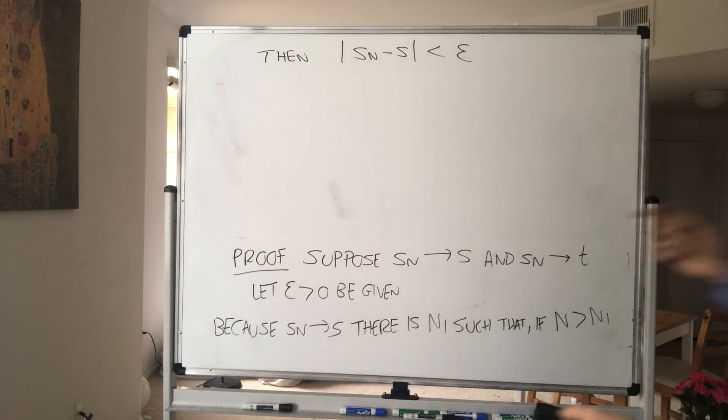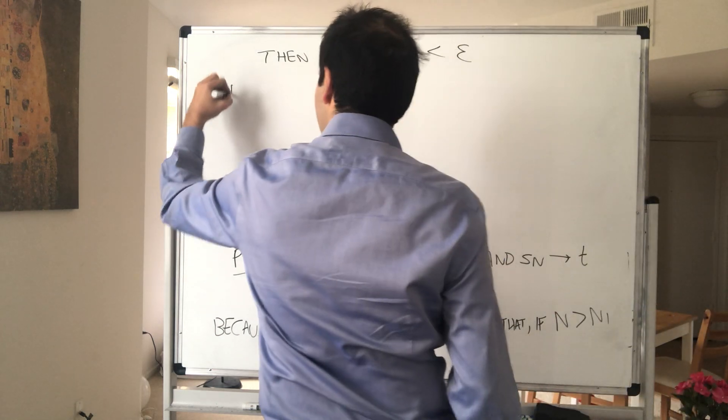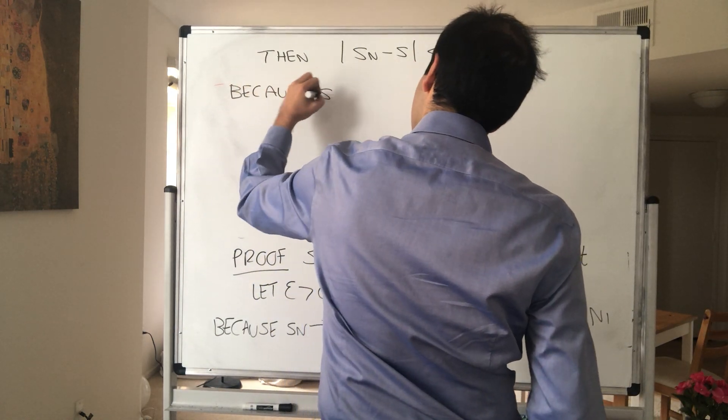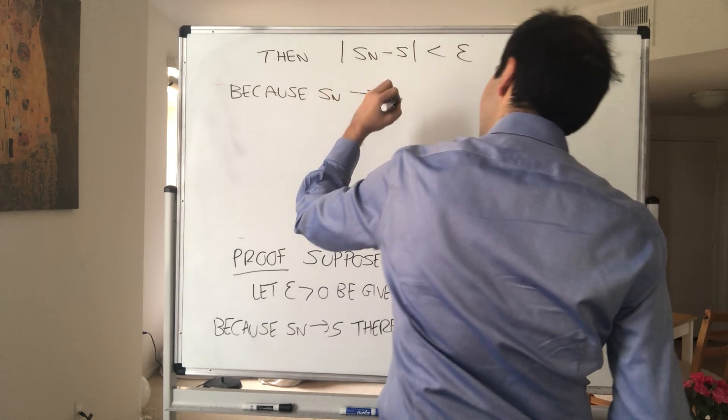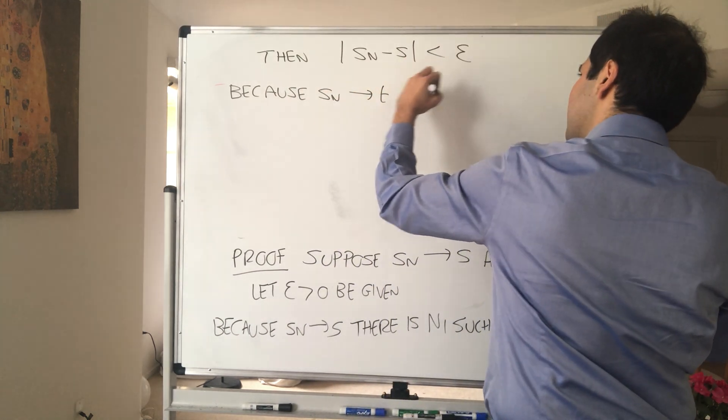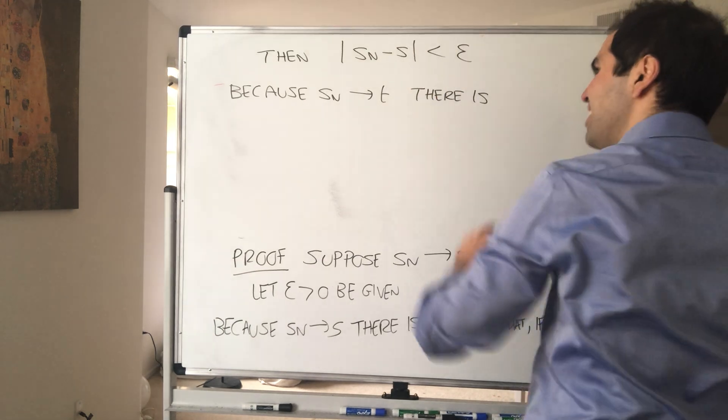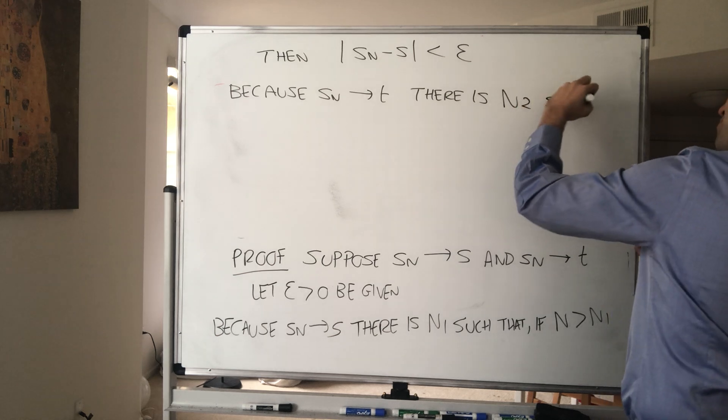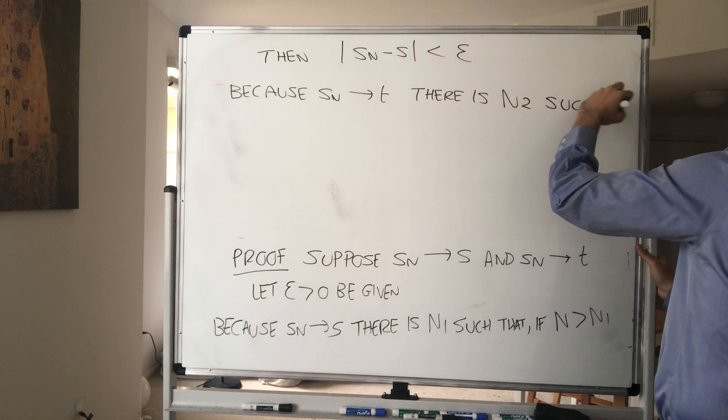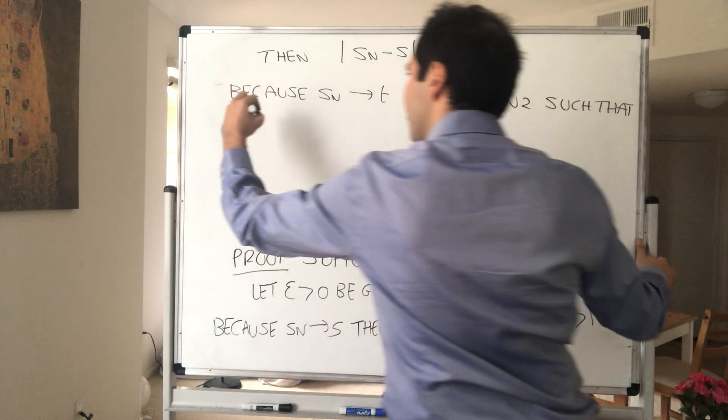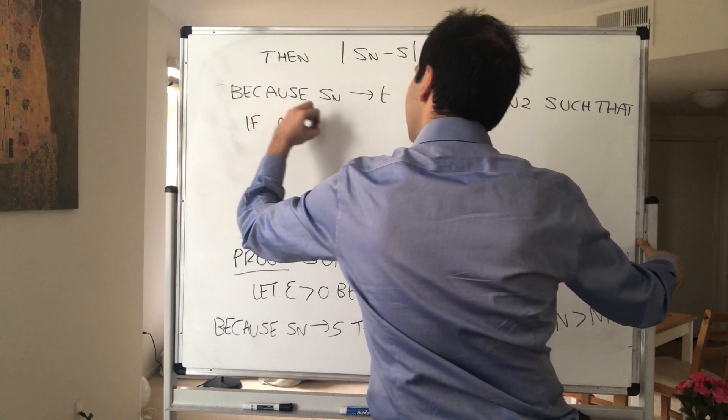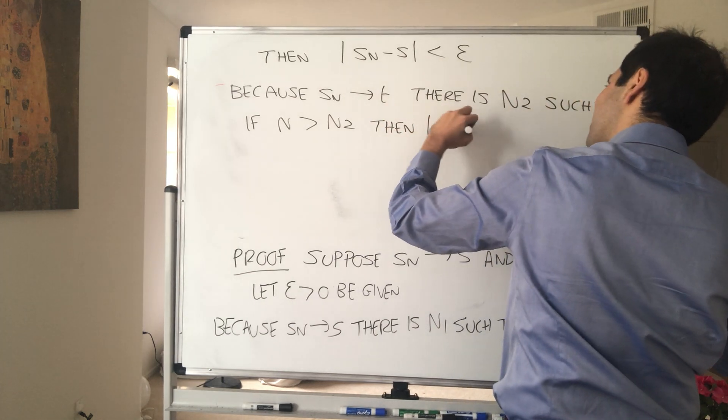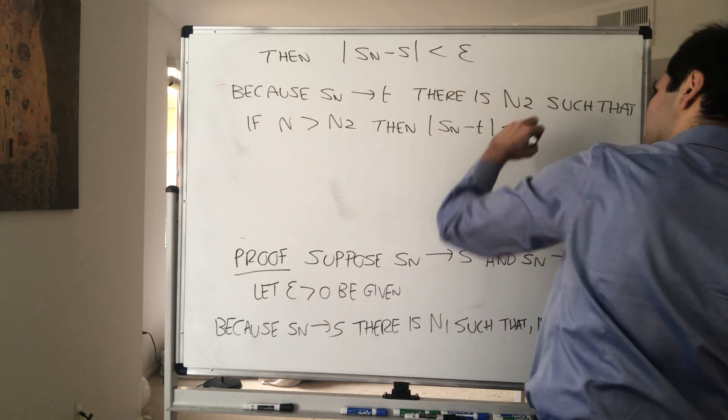On the other hand, because Sn now converges to T, we know that there is N2 such that if N is bigger than N2, then Sn minus T is also less than Epsilon.